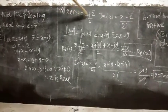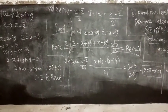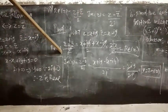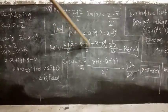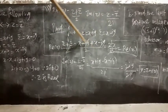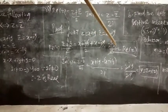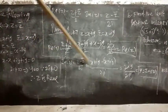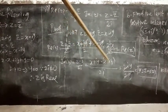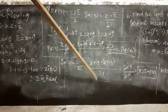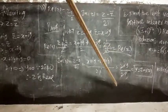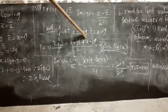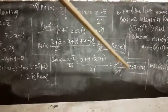Proof of formulas: real part of z equals (z + z̄)/2, and imaginary part of z equals (z − z̄)/2i. With z equals x plus iy and z̄ equals x minus iy: (z + z̄)/2 equals (x + iy + x − iy)/2 equals 2x/2 equals x, which is the real part of z. For imaginary part: (z − z̄)/2i equals (x + iy − x + iy)/2i equals 2iy/2i equals y, which is the imaginary part of z.